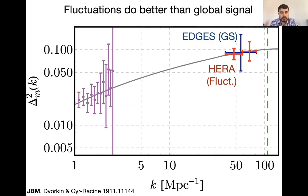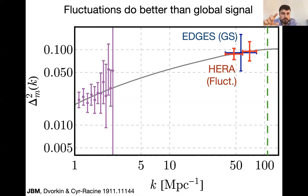Going back to the matter power spectrum, the fluctuations do better than the global signal. The forecast for HERA shows two red crosses with better resolution in K and better precision, because you have angular information and don't have to worry as much about foregrounds. In general, anything you can do with the global signal, you can do better with the power spectrum. Now I'll tell you about how to use this as a standard ruler during cosmic dawn.